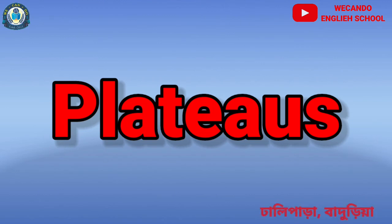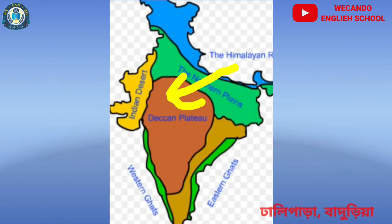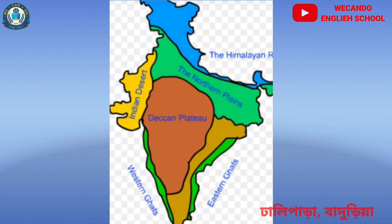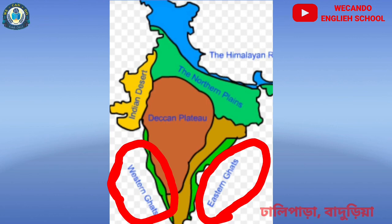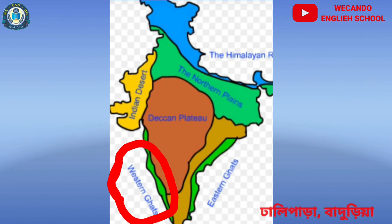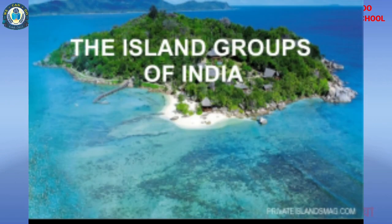Next are the plateaus. These regions are triangular in shape and lie to the south of the northern plains. They extend till Kanyakumari, which is the southernmost tip of peninsular India. Our country India has beautiful coastlines on both sides, in eastern Ghats and western Ghats. The last one is the island chains, which are present on both sides of the Indian peninsula. The islands are found in the Bay of Bengal — the Andaman Nicobar Islands and Lakshadweep Islands.